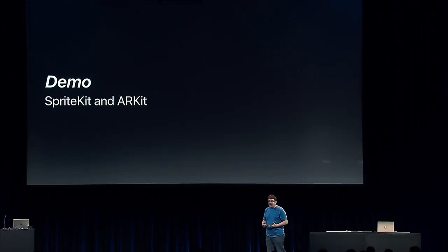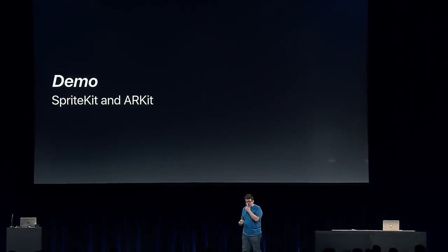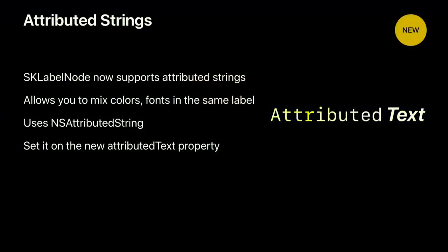There are a few other SpriteKit features I'd like to quickly cover. The text at the bottom of our screen was animated with a single SKLabelNode, thanks to the fact that they now support attributed strings. Attributed strings allow you to specify attributes for each character — mixing different colors and fonts in the same label. It uses NSAttributedString, and all you have to do is set it on SKLabelNode's new attributedText property.